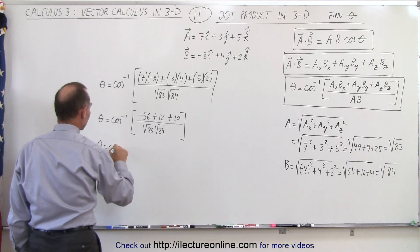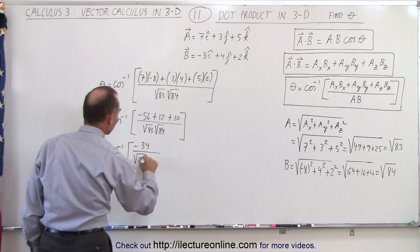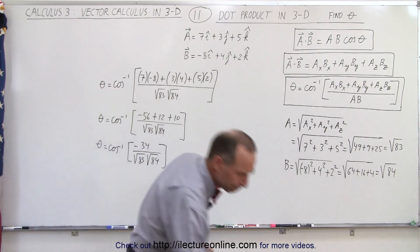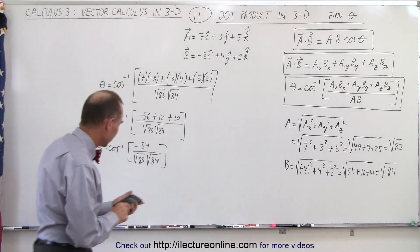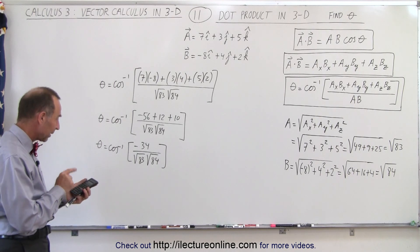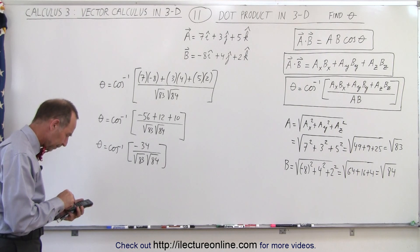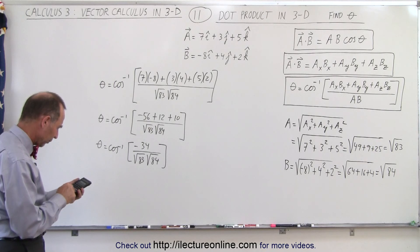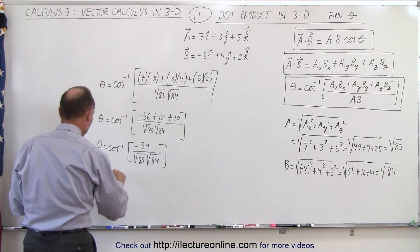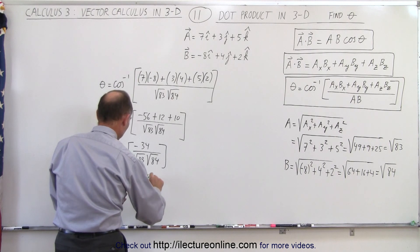So theta is equal to the inverse cosine of negative 34, divided by the square root of 83 times the square root of 84. At this point, we need a calculator. We take the square root of 83, multiply by the square root of 84, take the inverse of that product, and multiply by negative 34. That gives us theta equals the inverse cosine of negative 0.407.